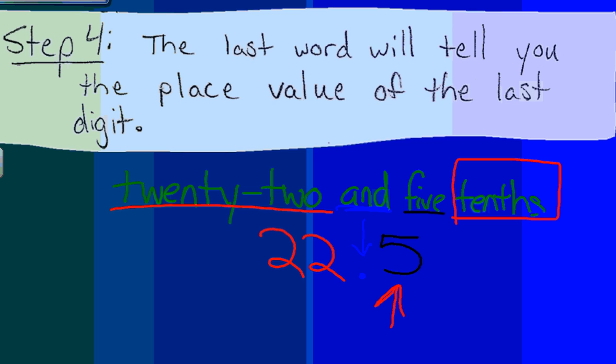If this were five hundredths, then I would have to erase my five and fill the tenths place with a zero, and place a five in the hundredths place. But fortunately with this example, we have five tenths. So I will write it back as it was.